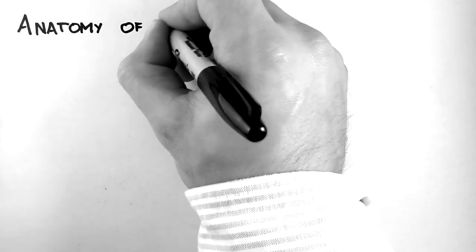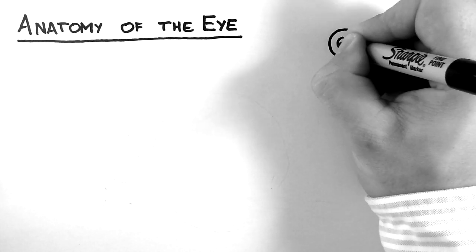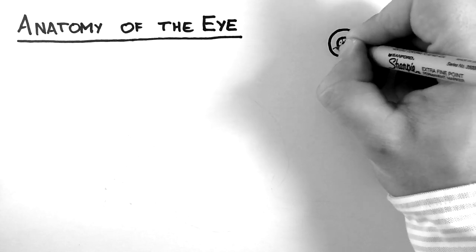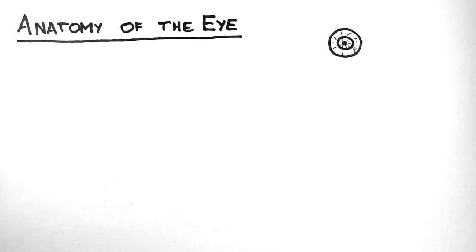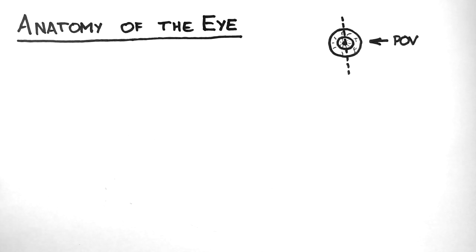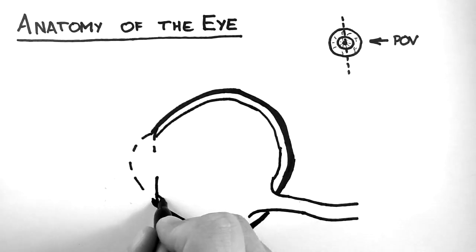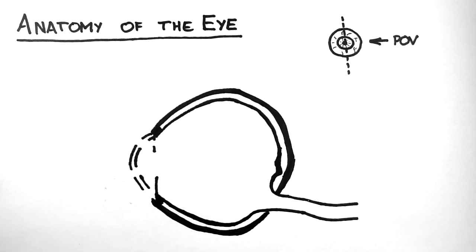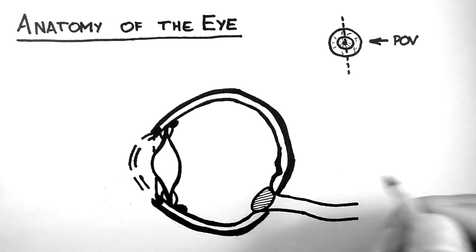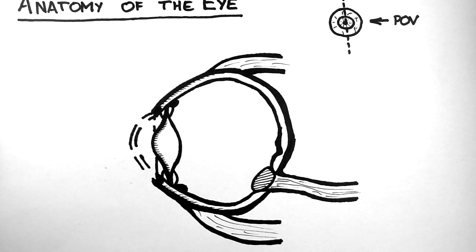In this video I'm going to discuss the anatomy of the eye. To illustrate this, I'm going to draw the eye in cross section, splitting it down the middle, and our point of view will be from the front. The eye kind of looks like this, and I'll start by labelling some of the major features.